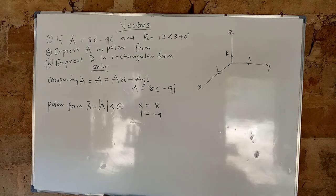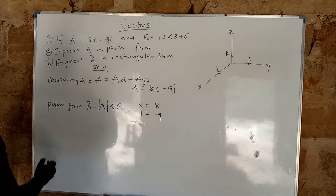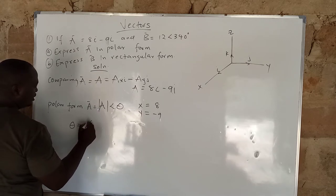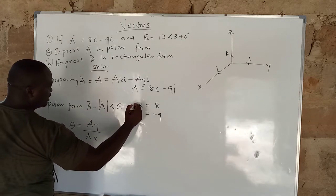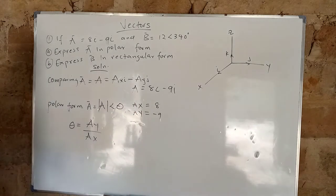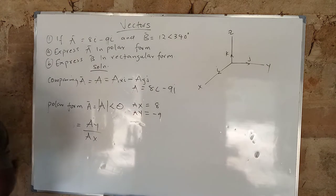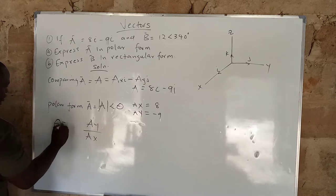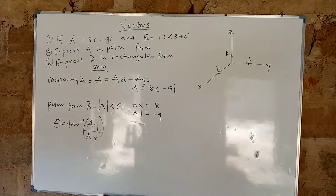Remember, under vectors I proved the formula that theta equals Ay over Ax. So theta equals the tan inverse of Ay over Ax.